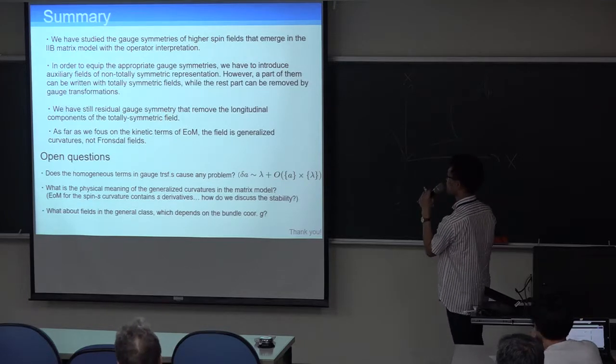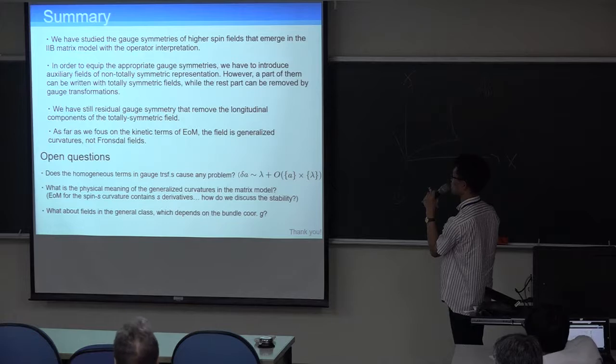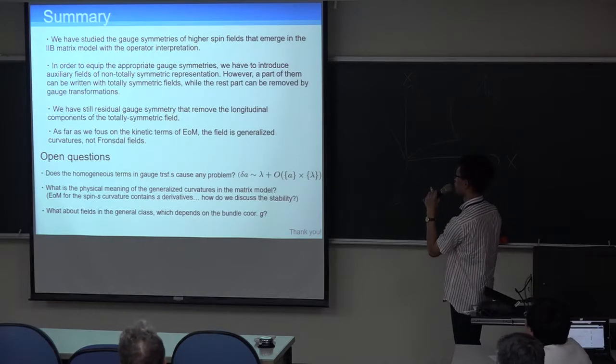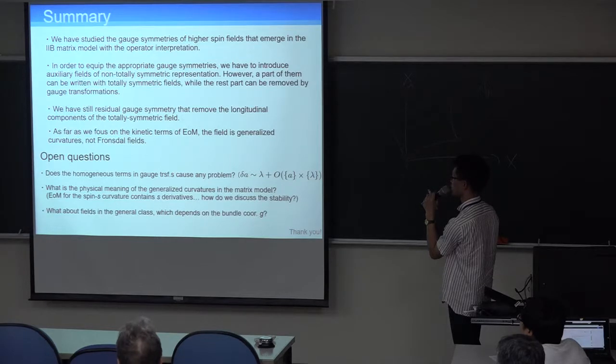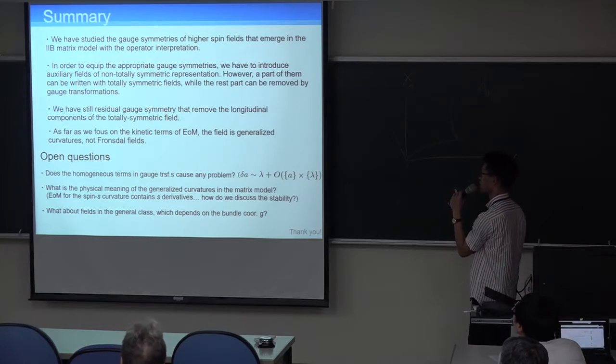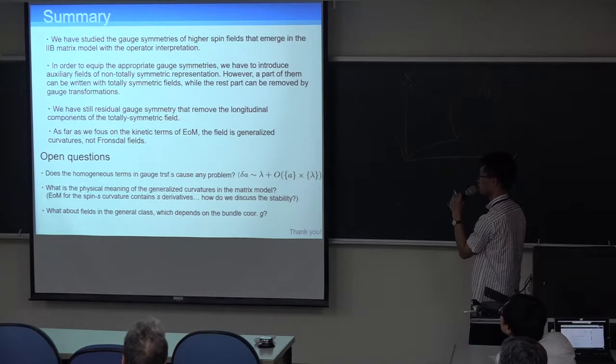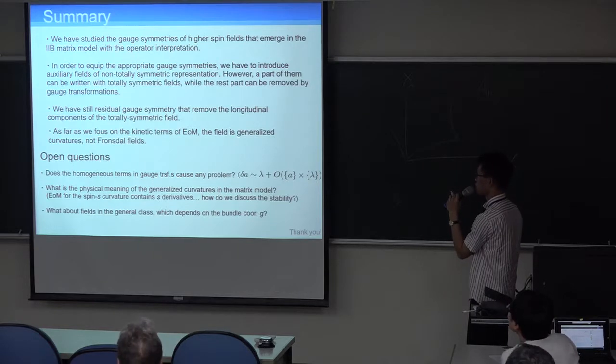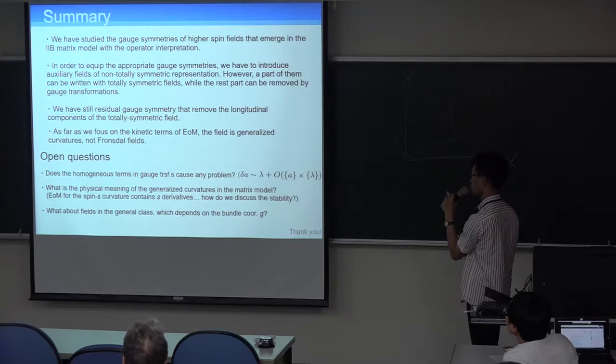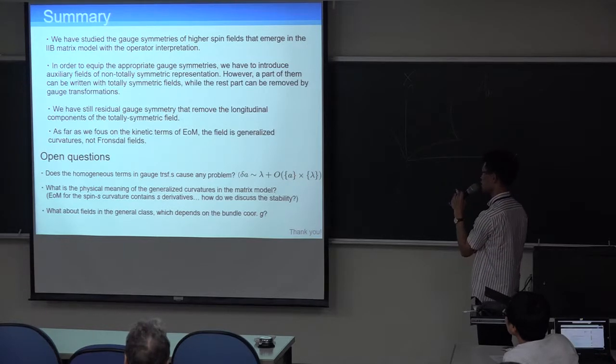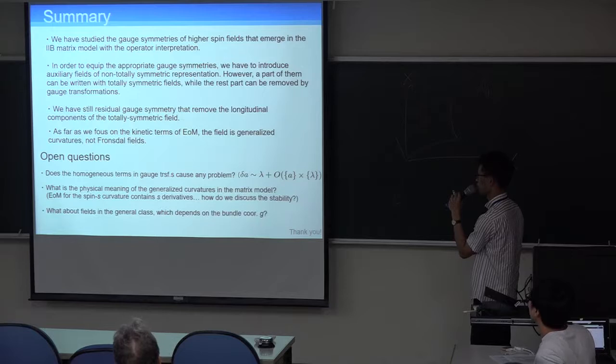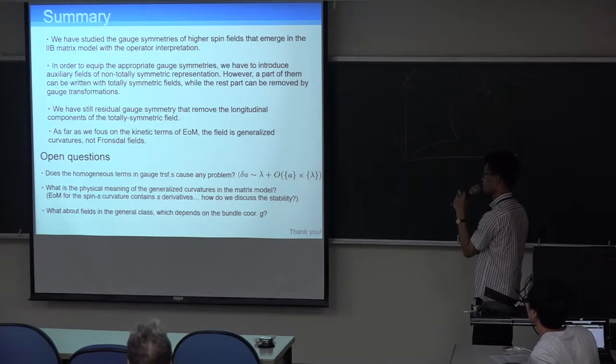Here's a summary. We have studied the gauge symmetries of higher spin field that emerges in the 2B matrix model with the operator interpretation. In order to equip the appropriate gauge symmetries, we have to introduce auxiliary fields of non-totally symmetric representation. However, a part of them can be written with totally symmetric fields, while the rest part can be removed by gauge transformation. And moreover, we have still residual gauge symmetry that removes the longitudinal components of the totally symmetric fields. So we have healthy higher spin fields. As far as we focus on the kinetic term of each equation of motion, that field is generalized curvature, not Fronsdal fields.